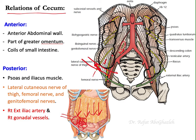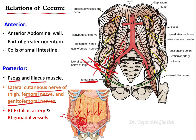The genitofemoral nerve passes through the inguinal canal on its way distally. Between the two muscles — the iliacus and psoas major — passes the femoral nerve. So posteriorly to the cecum you have: psoas major, iliacus, lateral cutaneous nerve of thigh, femoral nerve, genitofemoral nerve, and two vessels — the external iliac artery and the gonadal vessels (right side).